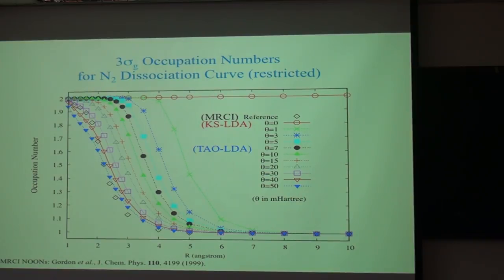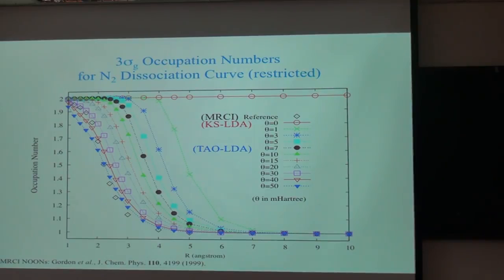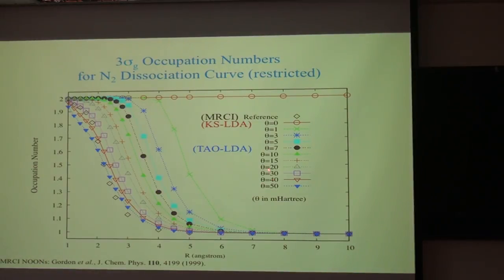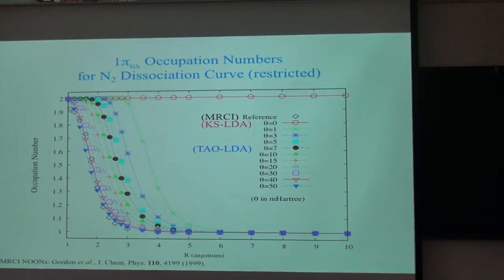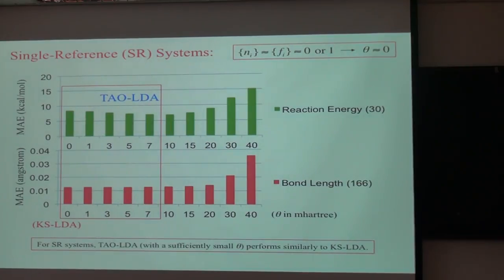The reference values are obtained by multi-reference configuration interaction for the corresponding natural orbital occupation numbers. As you can see, it can be simulated very nicely by tau LDA with C_dot between 30 and 50 milli-Hartree. Similar results are obtained here.